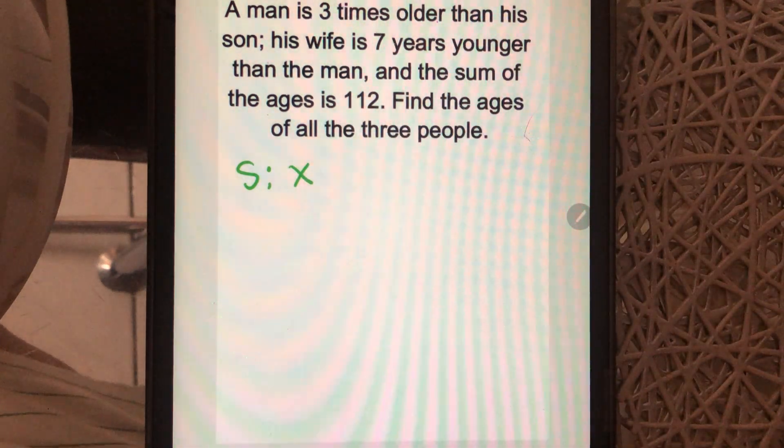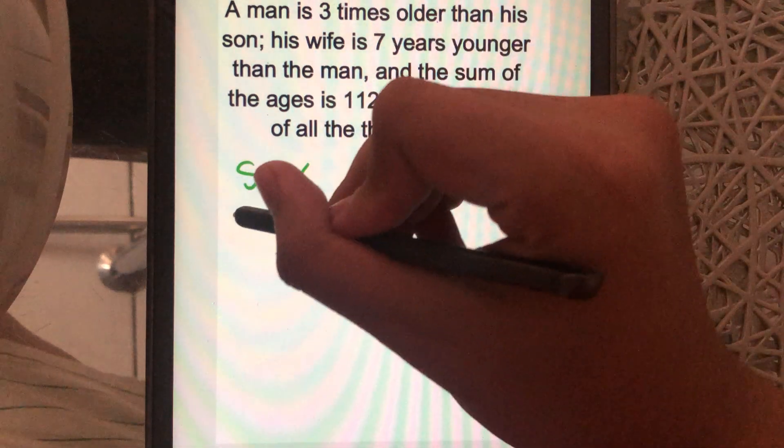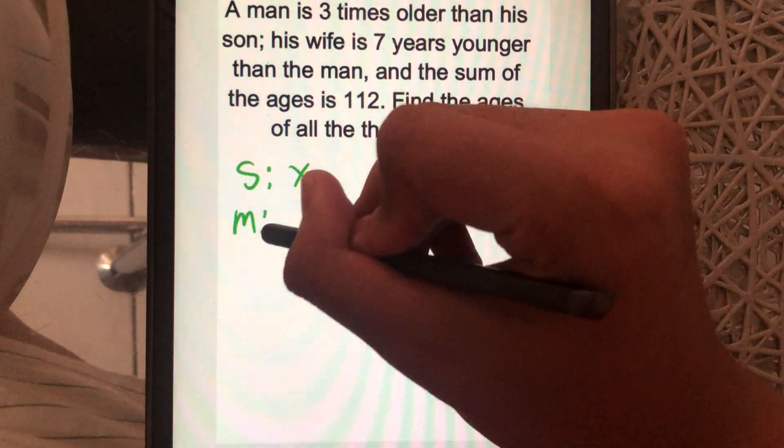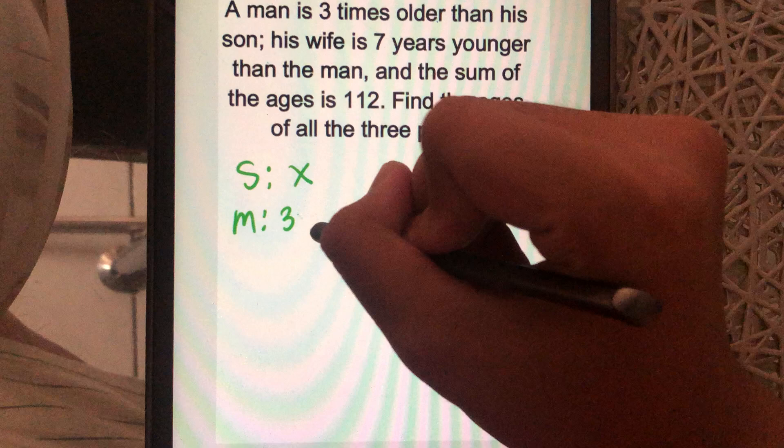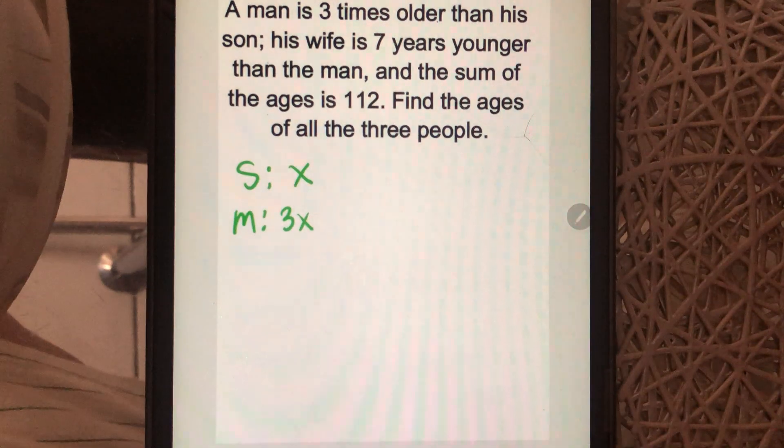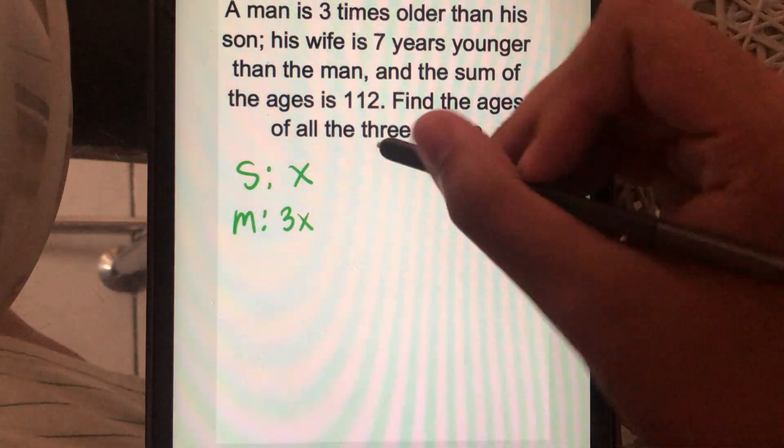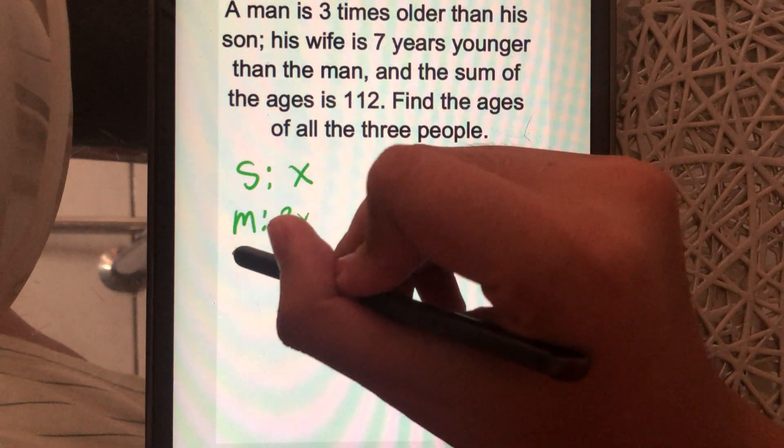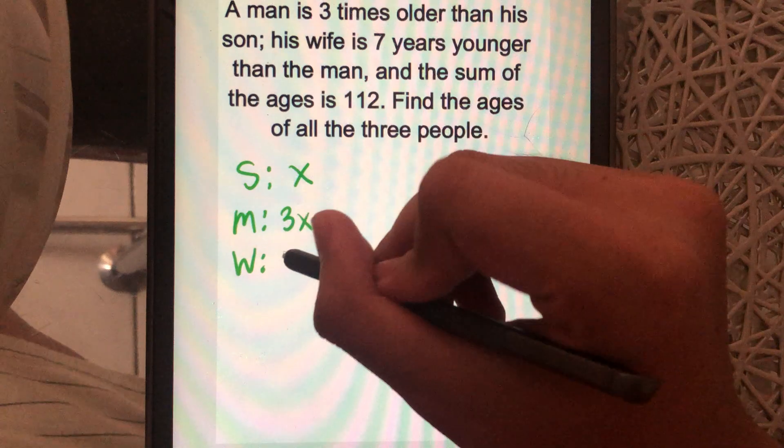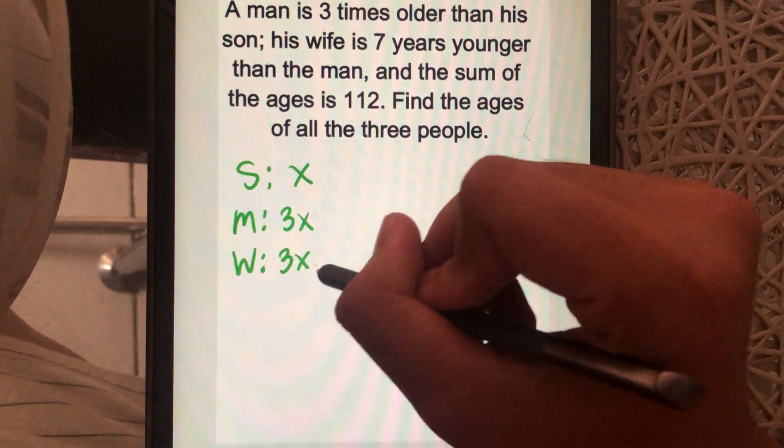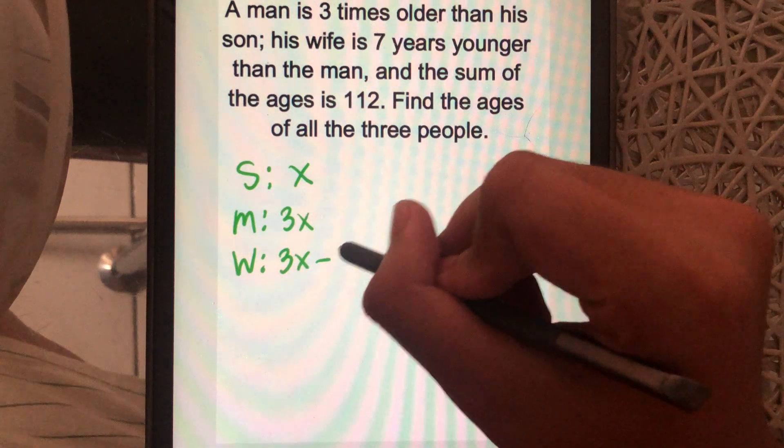And then the man is three times older than his son, so we can put here M equals 3X. And then his wife is seven years younger than the man, so we can put here W equals to 3X minus 7.